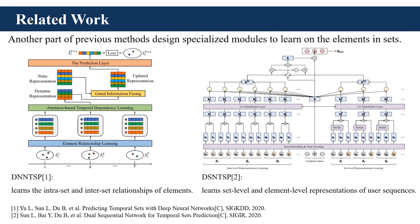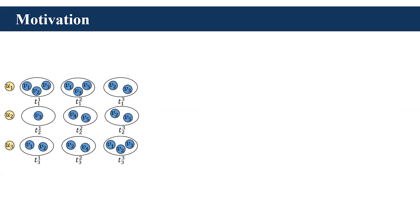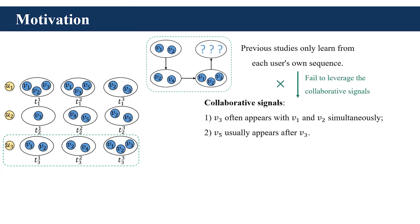To alleviate the information loss issue, methods in the second group design components to learn elements in sets. The DNN-TSP model first captures the intra-set relationships of elements by constructing set-level co-occurrence graphs, then learns the temporal dependencies and shared patterns of elements based on the set attention mechanism and the gated updating mechanism. The DSN-TSP introduces a dual sequential network to learn both set-level and element-level representations of user sequences and employs a co-attention structure to capture temporal dependencies.